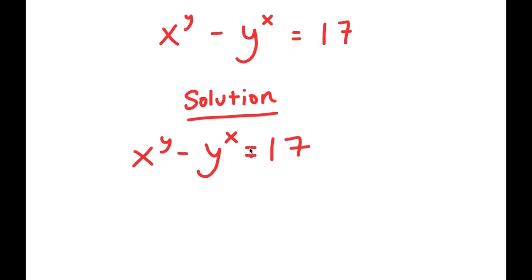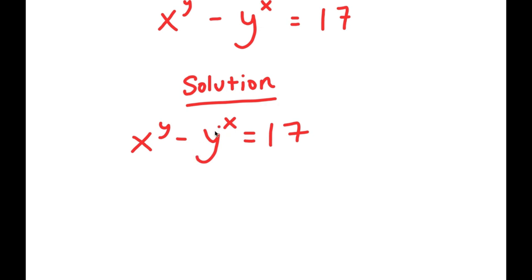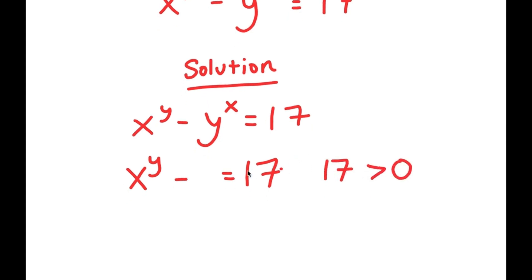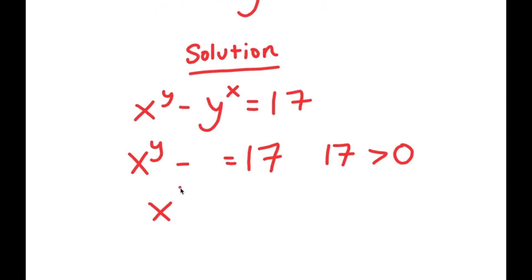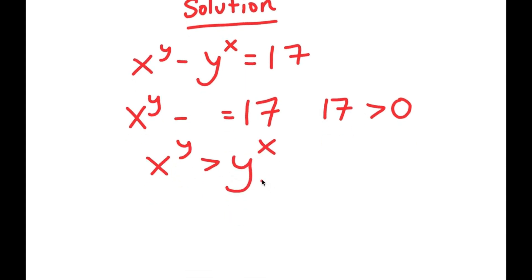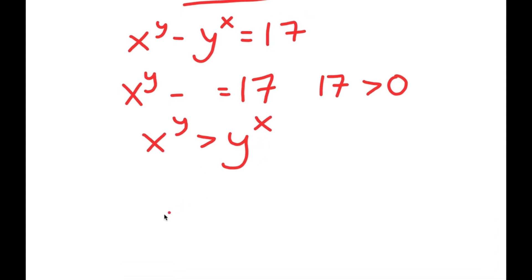Now, to start, just by looking at this equation, what can we infer? Notice how we have x to the power of y minus something is equal to 17. And 17 is greater than 0, meaning x to the power of y is greater than y to the power of x. This also must mean that x is greater than y, and y is greater than 0.